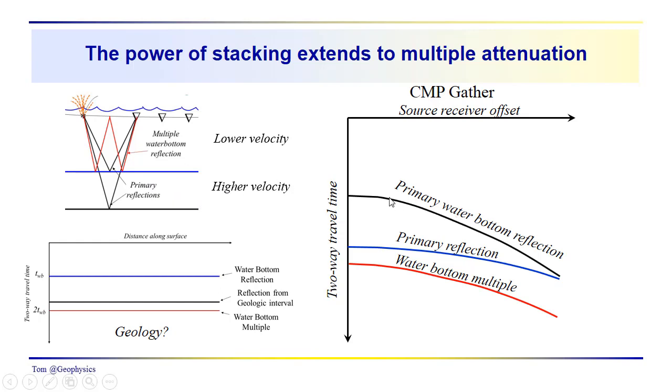We have our primaries, which are traveling in the higher velocity here. So, this diagram here, which is not too good, but we can see the primary water bottom reflection coming in.